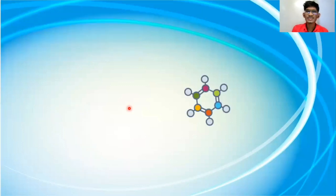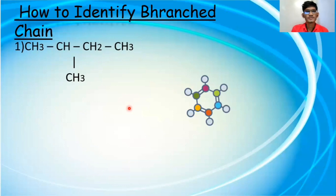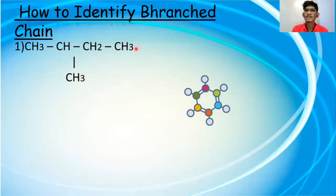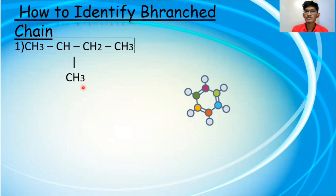Now, how do we identify a branch chain? In the case of a branch chain, the terminal points will be more than two. Let us count the terminal points: there are three CH3 groups, so there are three terminal points. This means we have a longest carbon chain and a methyl branch attached to one of the carbons. That is our methyl branch.